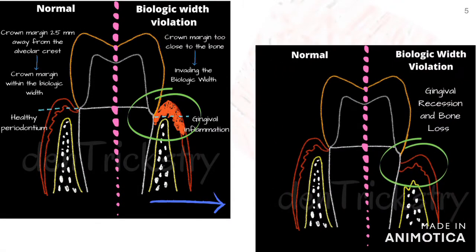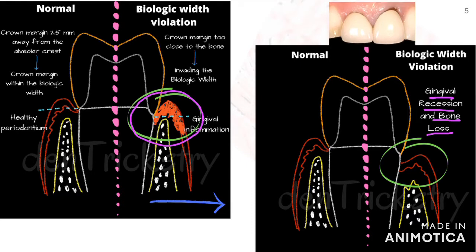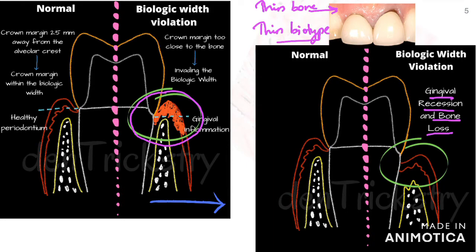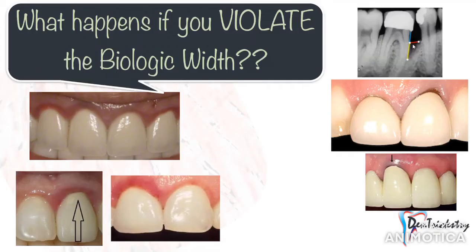What happens if you violate the biologic width? Basically, when the crown margin goes beyond the sulcus it irritates the area and you have two possible consequences. One is bone loss which may result in pocket formation or gingival recession — this is usually seen when you have a thin facial bone and thin soft tissues, so the gingival biotype and the kind of bone also matters. The second and most common clinical appearance of biologic width invasion is gingival inflammation and bleeding on probing, where the crown acts as a permanent irritant to the junctional epithelium causing persistent chronic inflammation.